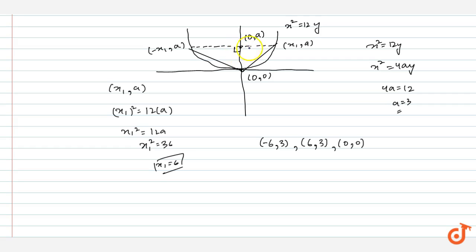So we can apply the formula of area: half into base into height. Here the height of the triangle is a and the base of the triangle is 2x₁.